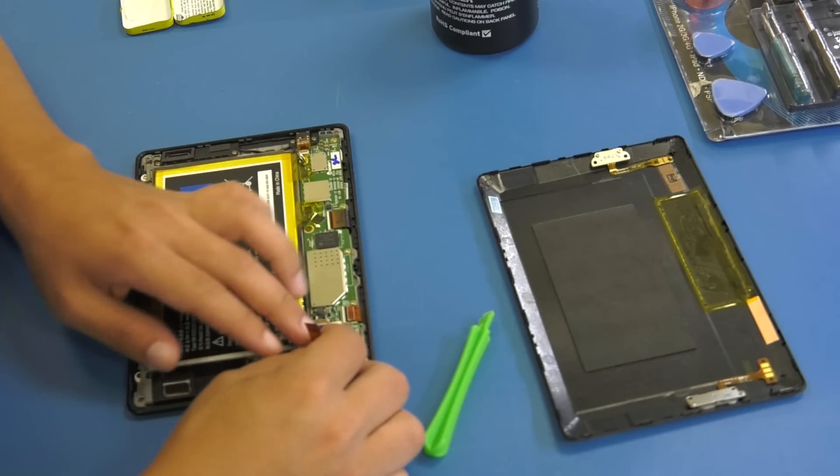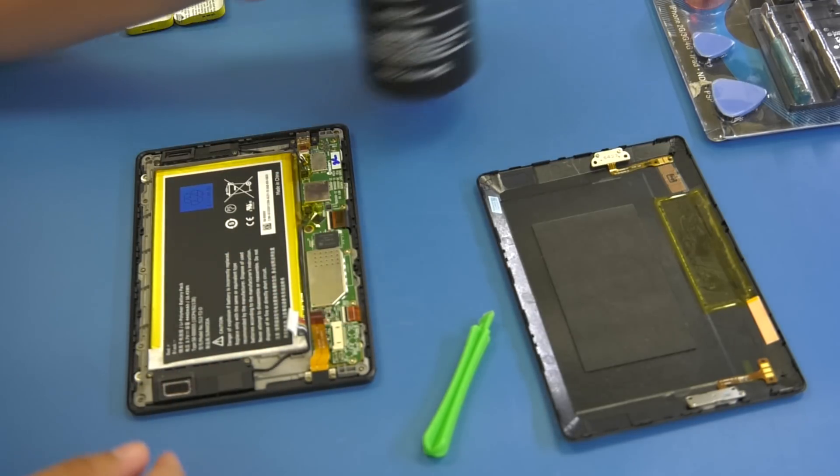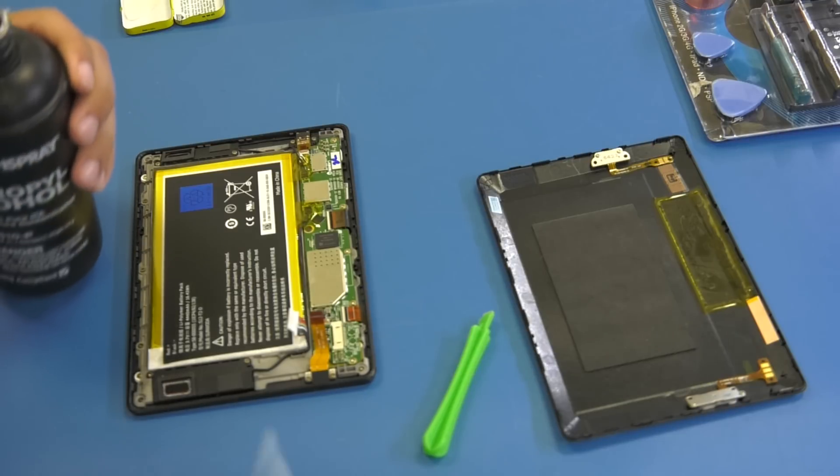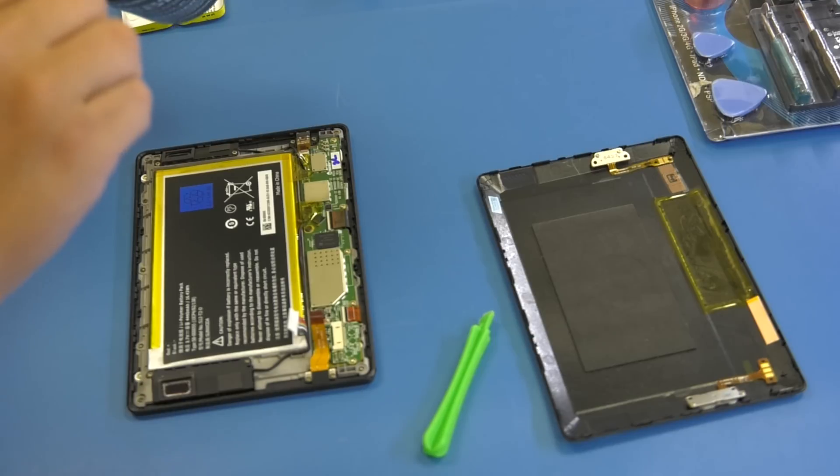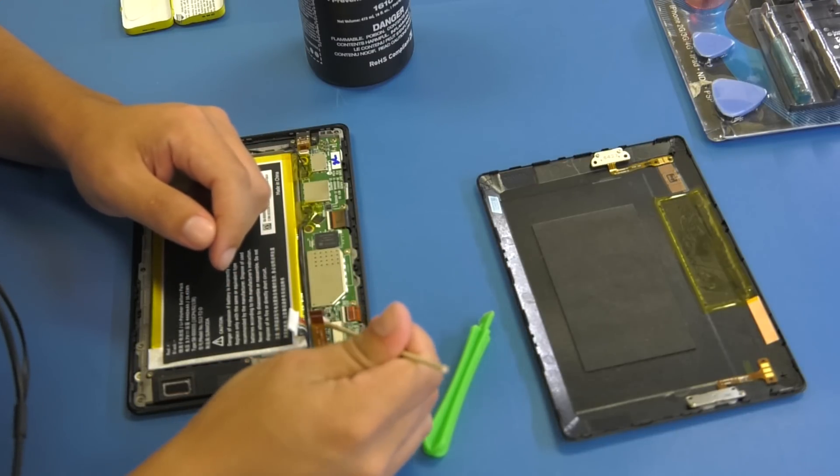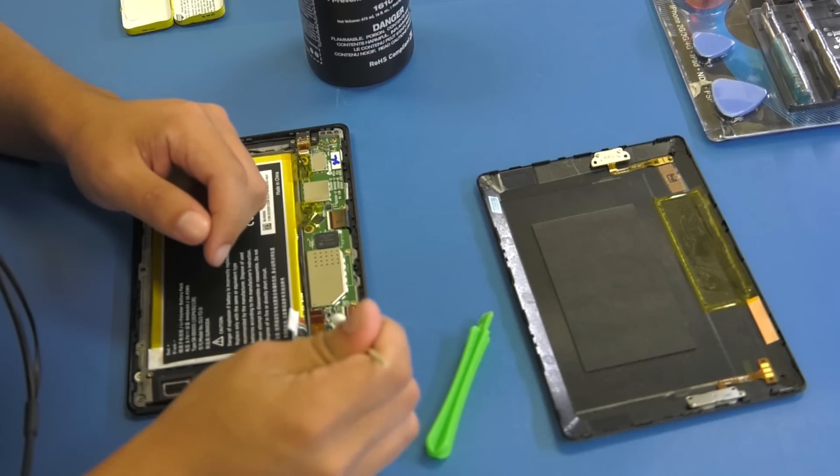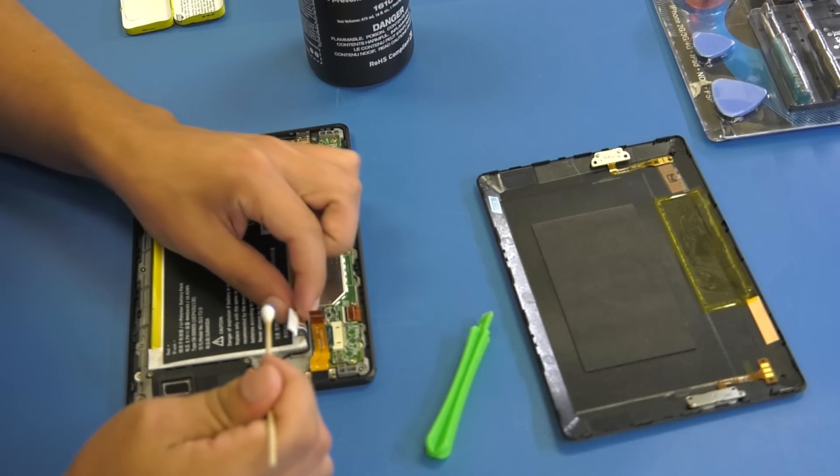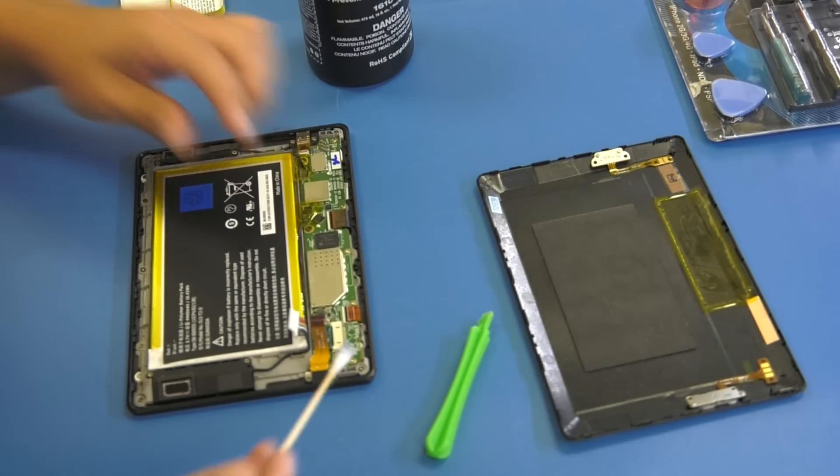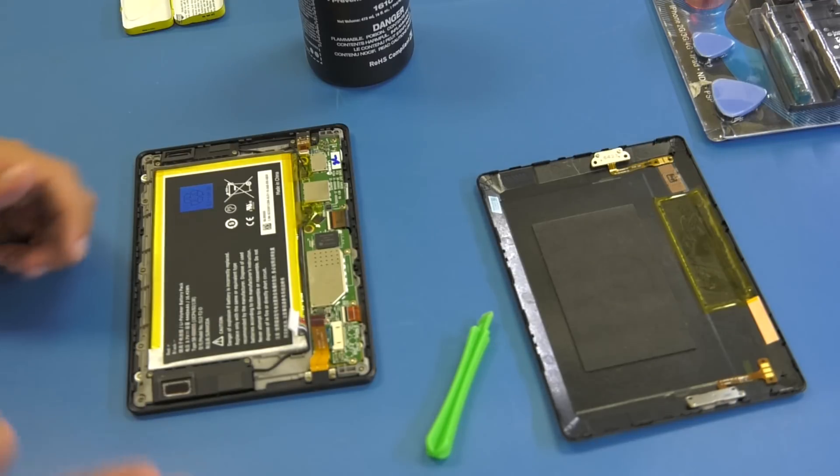Now that we have it disconnected, we're going to get some isopropyl alcohol and we're going to clean it up to make sure that there's no debris or anything damaging the connection or obstructing the connection. Just put it in there. Rub it in and wait until it dries, like a few seconds. And then we're going to connect it all back in and we're going to test it.